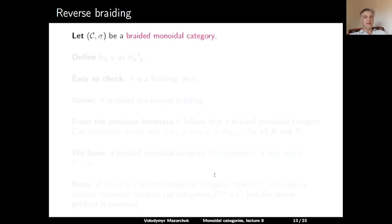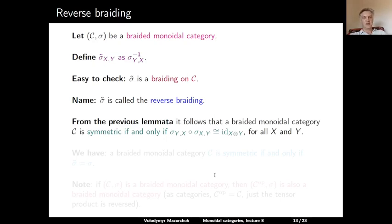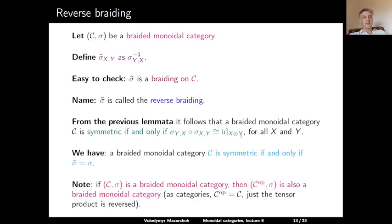Now let us talk about the reverse braiding. Let C be a braided monoidal category with braiding sigma. Define sigma-tilde_{X,Y} = (sigma_{Y,X})^{-1}. It is easy to check that sigma-tilde is a braiding on C, called the reverse braiding. From the previous lemmas, it follows that a braided monoidal category C is symmetric if and only if sigma_{Y,X} ∘ sigma_{X,Y} = id_{X ⊗ Y} for all X and Y — in other words, if and only if the reverse braiding coincides with the original braiding. Note that if C is a braided monoidal category with braiding sigma, then the opposite monoidal category C^op (with swapped tensor product factors) is also a braided monoidal category.